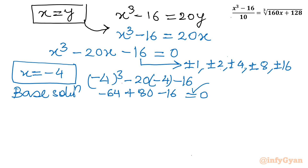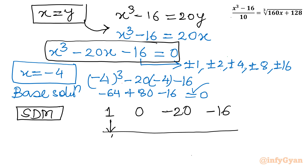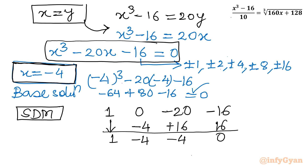Now I will use synthetic division to find the remaining two roots of this cubic equation. The coefficients are: x³ → 1, x² → 0, x → -20, constant → -16. Using base solution -4: bring down 1; multiply -4 × 1 = -4; 0 + (-4) = -4; multiply -4 × (-4) = 16; -20 + 16 = -4; multiply -4 × (-4) = 16; -16 + 16 = 0. The resulting quadratic is x² - 4x - 4 = 0.